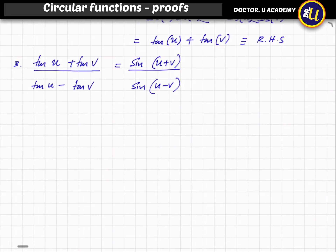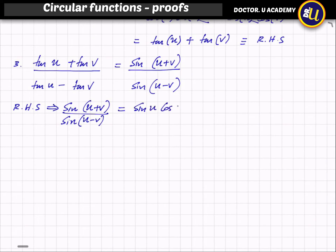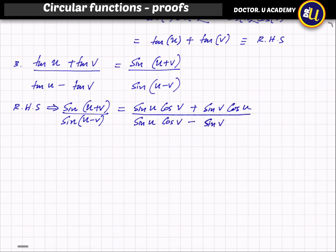In this question we have to show (tan u + tan v)/(tan u - tan v) equals the right hand side. I will take the right hand side, which is sin(u + v) divided by sin(u - v). Expanding, the numerator becomes sin u · cos v + sin v · cos u, and the denominator becomes sin u · cos v - sin v · cos u.